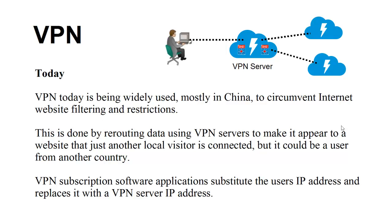VPN subscription software substitutes the user's IP address and replaces it with the VPN server's IP address, making the user anonymous — nobody can really know where you're coming from except the VPN server, which will be logging your IP address. Some VPN subscription services claim they do not log information, and that depends on local government requirements. Here in the United States, logging is generally required so individuals can be located if there are problems.